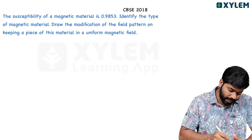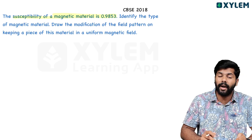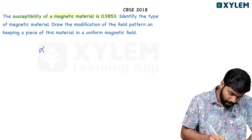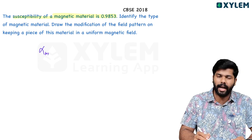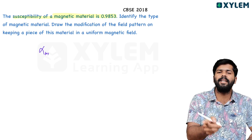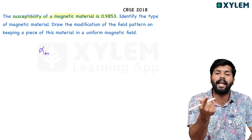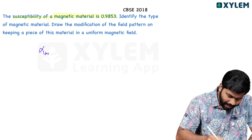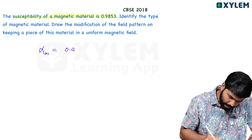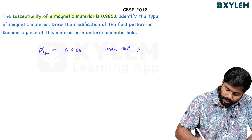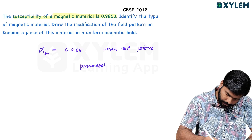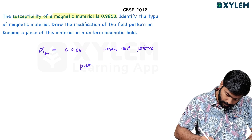Next question: the susceptibility of a magnetic material is -0.985. Identify the type of magnetic material. Since χm is negative, and diamagnetic materials have small negative susceptibility, while paramagnetic materials have small positive susceptibility — the value -0.985 is small and negative, so this material is diamagnetic.